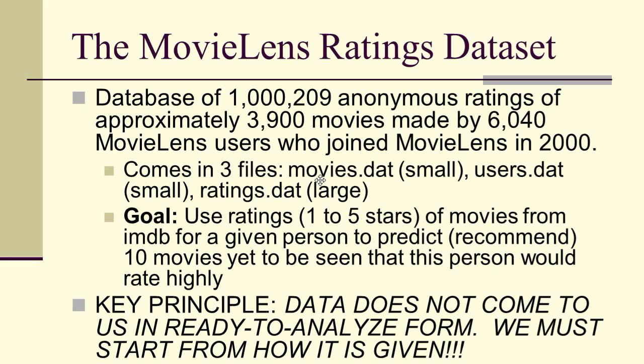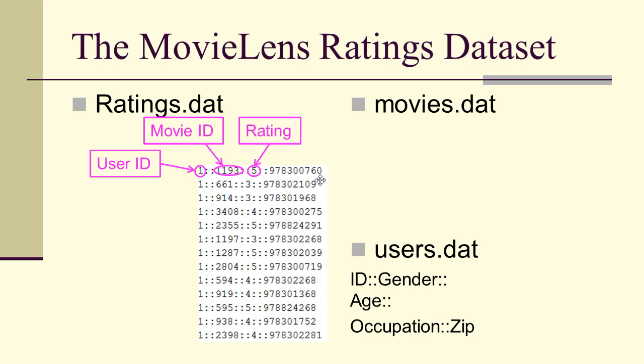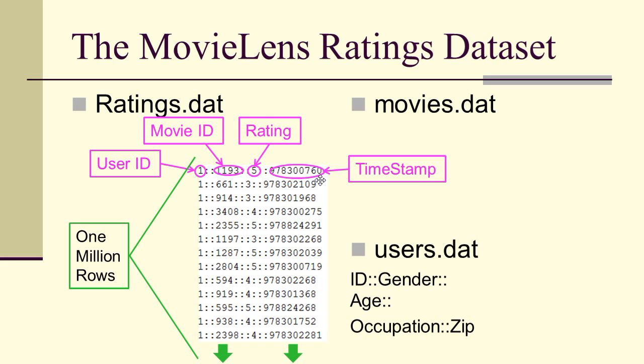A key idea to start with is that we have to first do some data management. This is not pre-processing — we're not changing the data itself — but we'll have to manage how it's presented and utilized, primarily for purposes of speed and memory. The ratings.dat data has a user ID, movie ID, a rating, and a timestamp, and we have a million rows of such ratings.